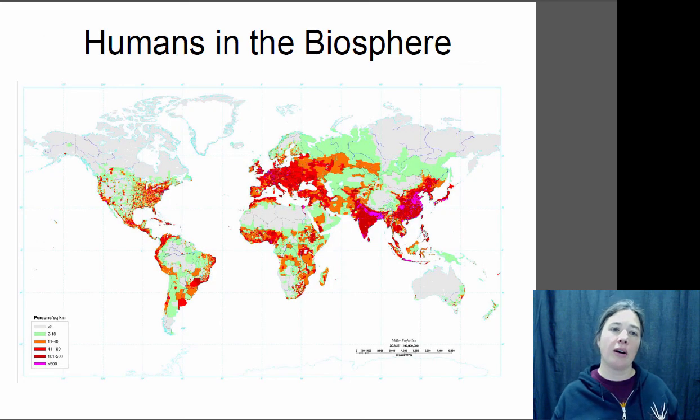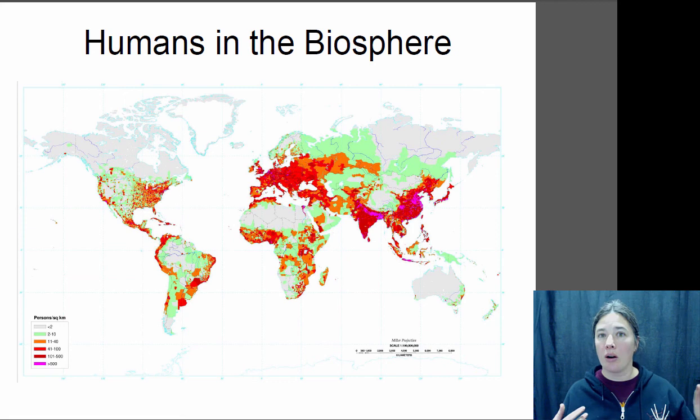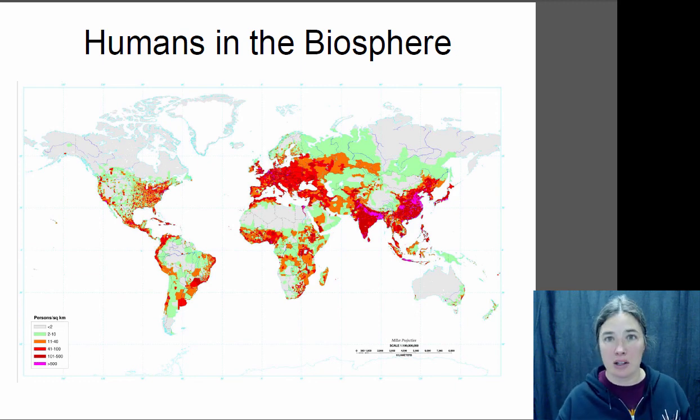Now the last factor I want to talk about in terms of understanding our global ecology is actually humans. We are a global species. We are found everywhere throughout the world. And we have a really big impact on our environment. So I'm going to go into the effect of humans on the environment more in our final section here on conservation biology. But it's something that needs to be kept in mind because we do have a really big impact on the planet. All right, that's it for today. I'll catch you next time.